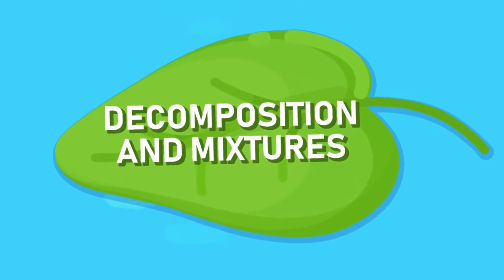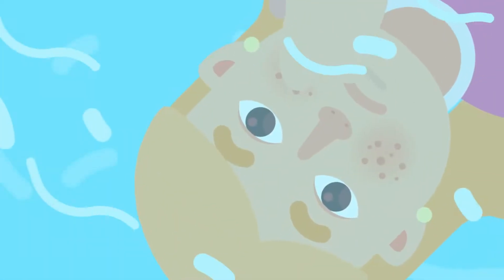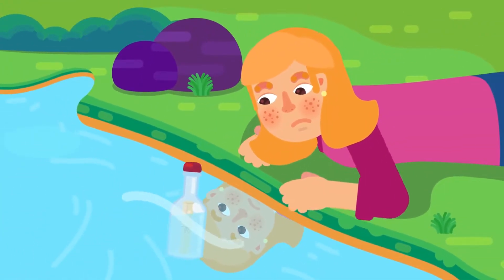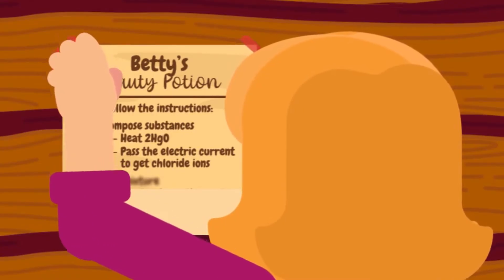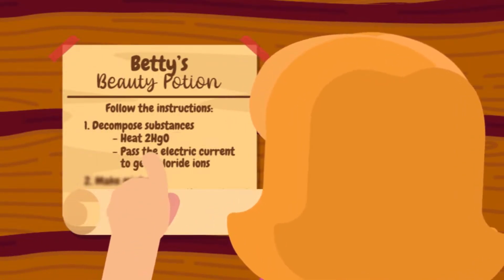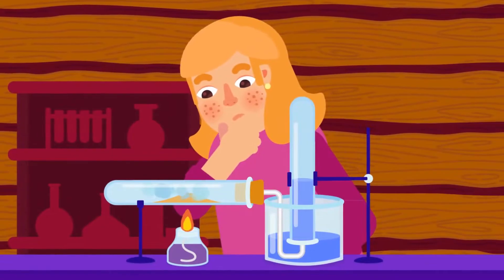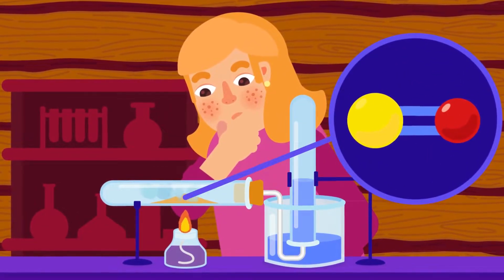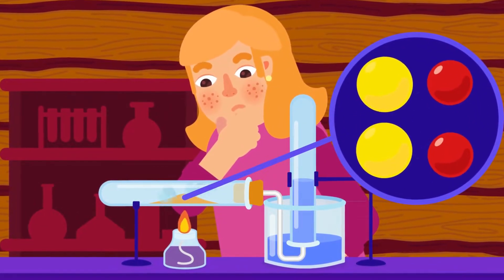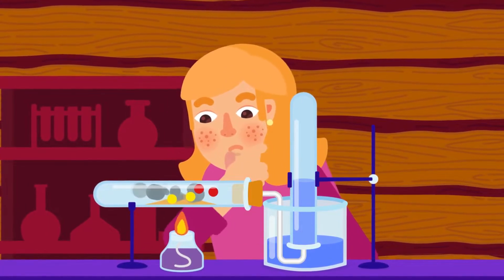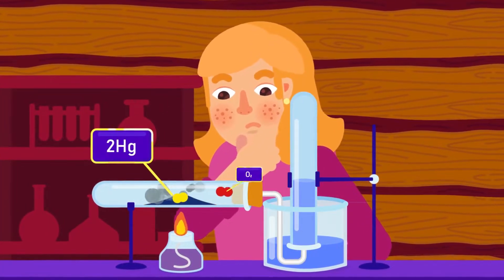There are two kinds of chemical processes that can break compounds into simpler components. These are called thermal decomposition and electrolysis. Thermal, as the name suggests, involves heating a compound strongly until it breaks down. For example, when mercury oxide is heated strongly, it breaks down into mercury and oxygen.